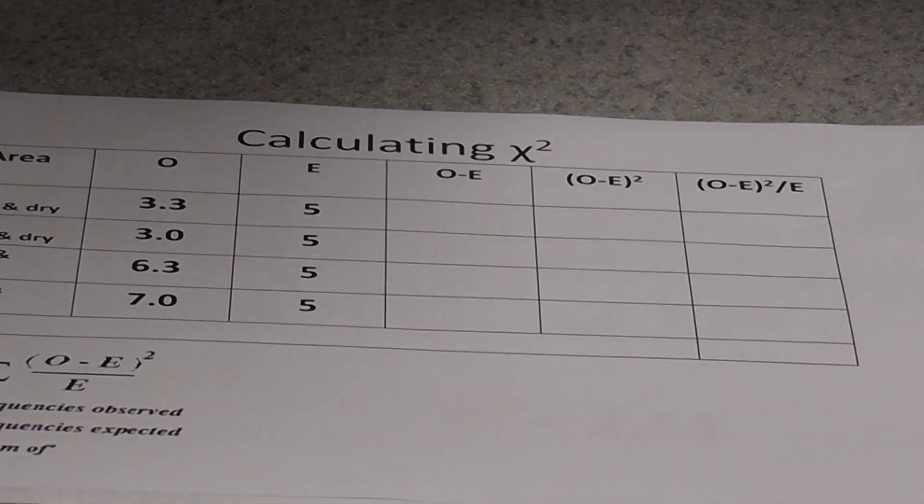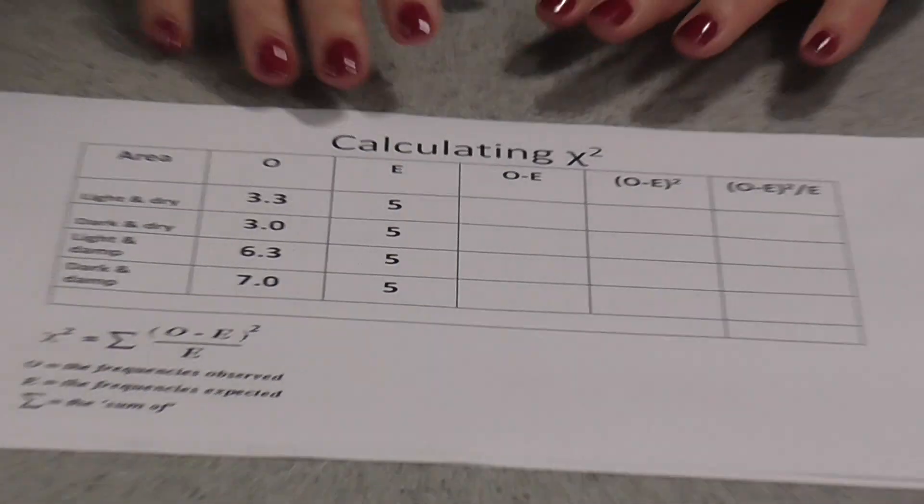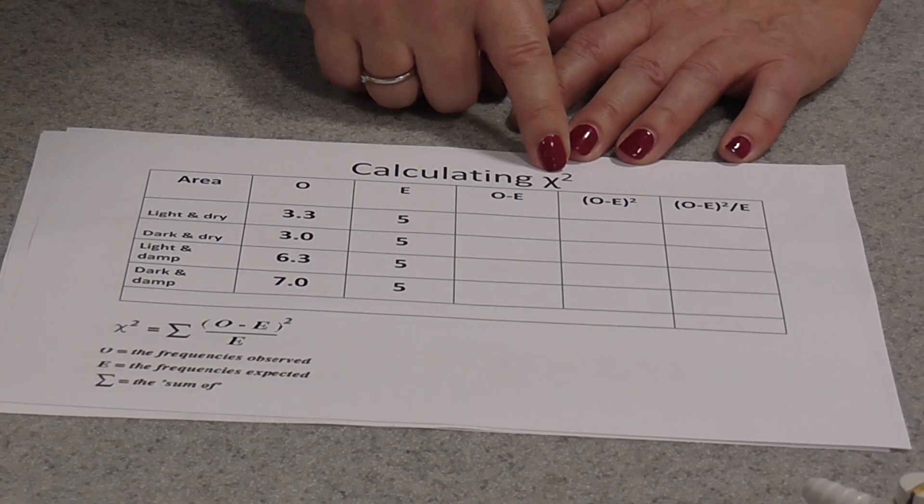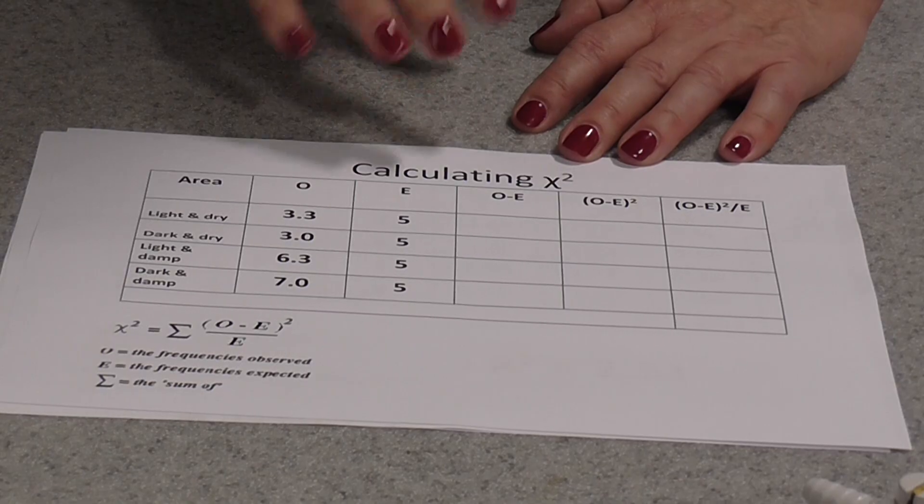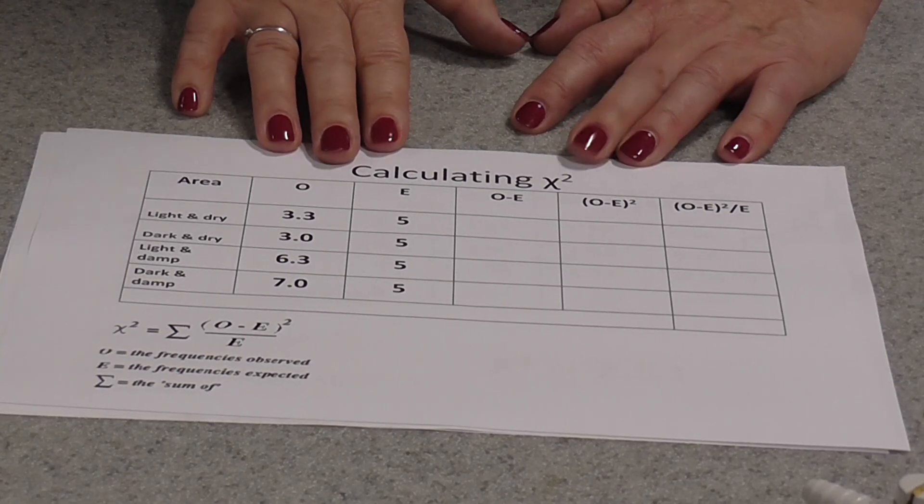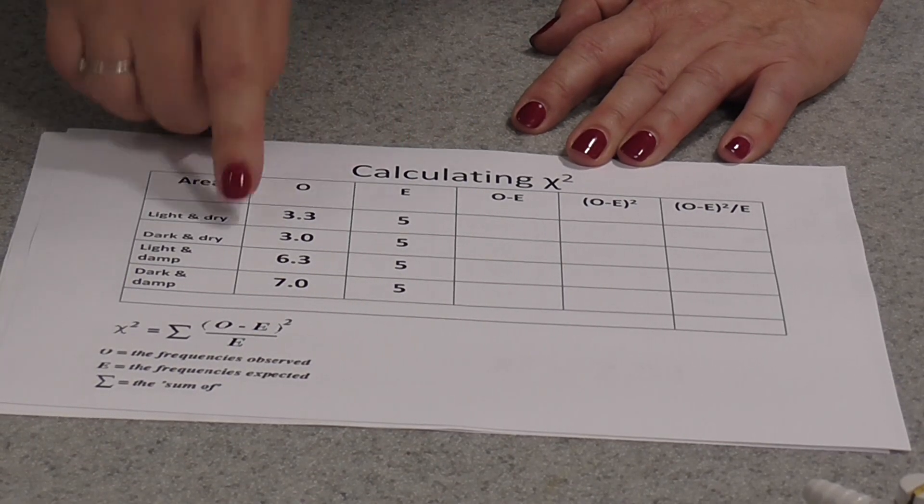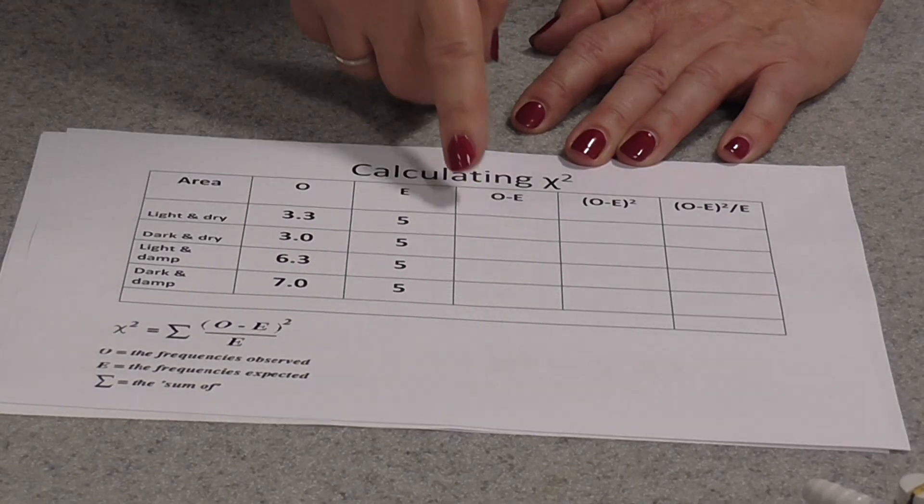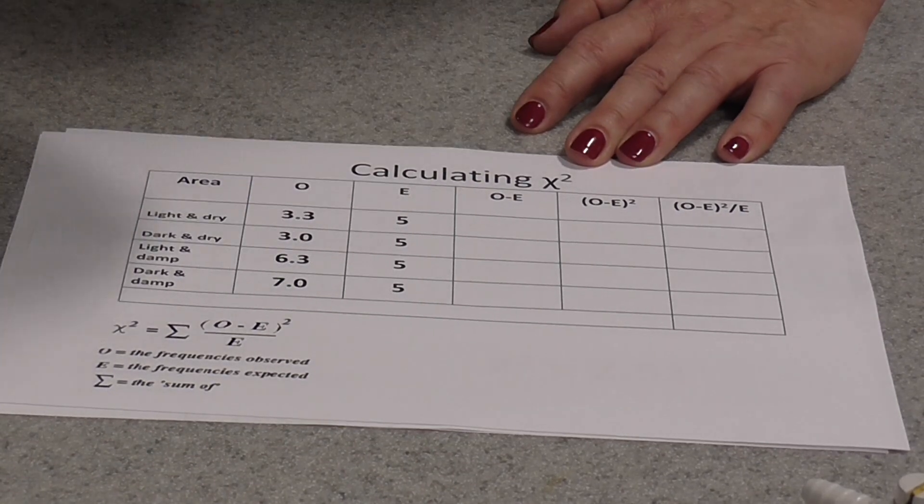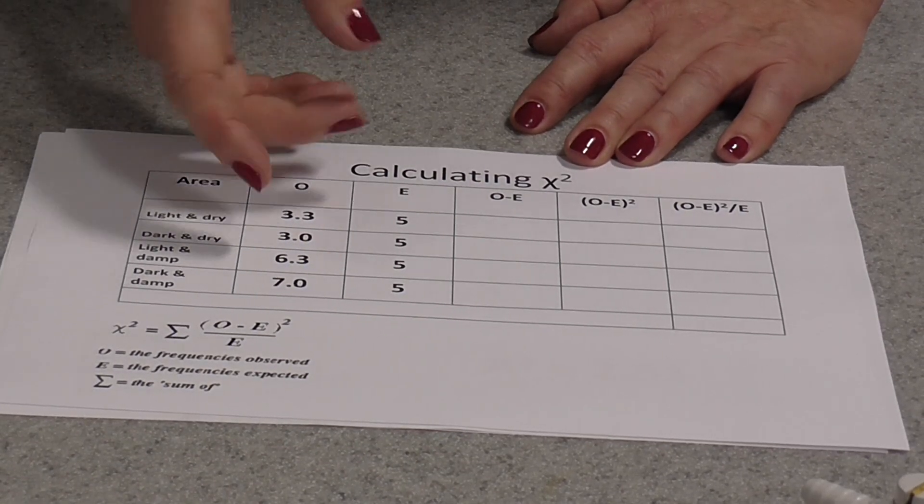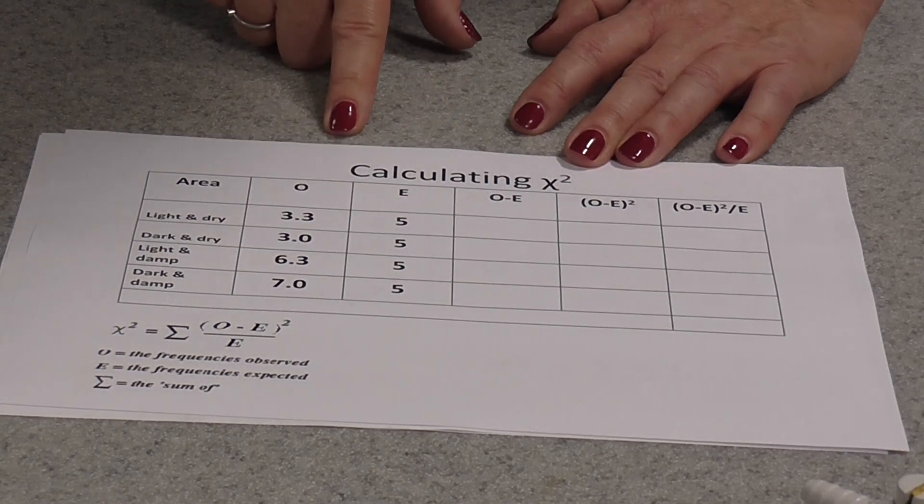Now the statistical test used in this case would be the chi-squared test. This symbol here represents chi-squared. This is a test that actually compares observed results of an experiment to the results you would expect if the thing you're investigating has no impact, in other words if the null hypothesis were true.